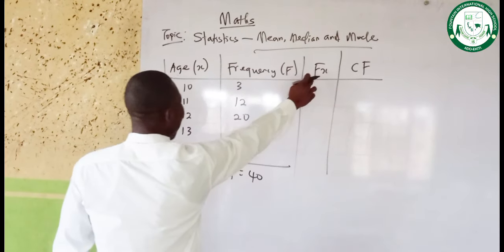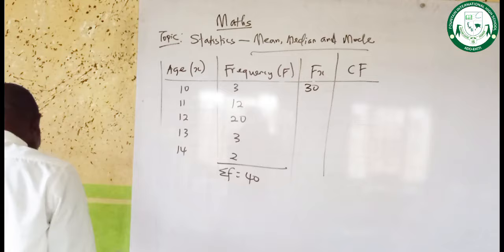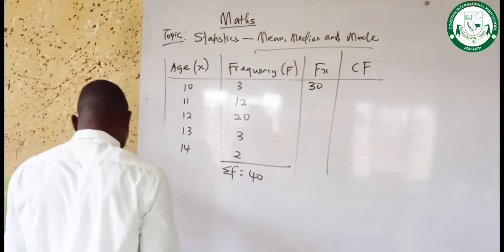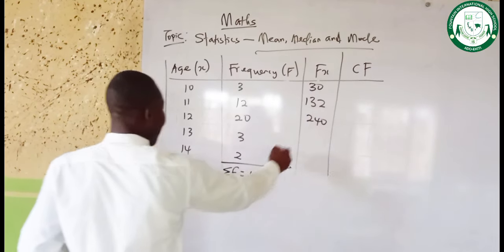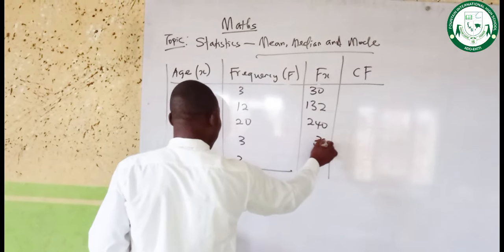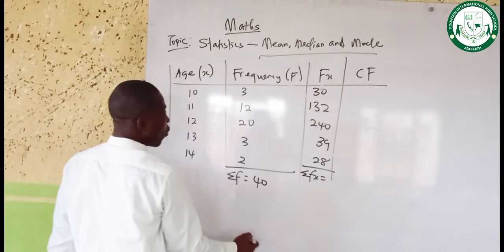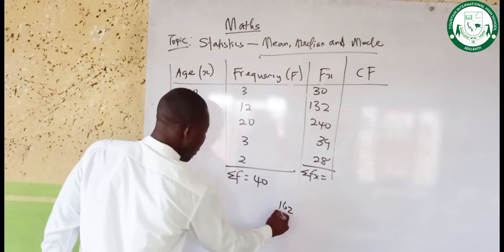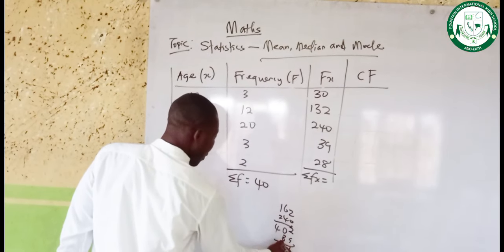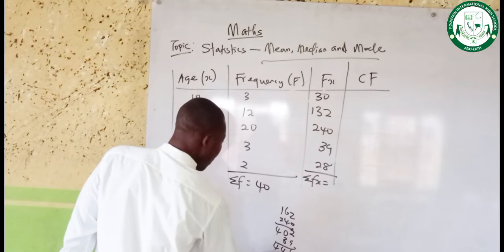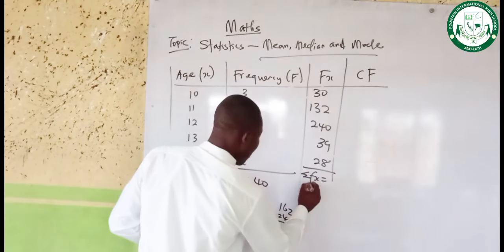Now, how do we get FX? That is F multiplied by X. 10 multiplied by 3 gives us 30. The next one, 11 multiplied by 12 gives us 132. Then 20 multiplied by 12 gives us 240. Then 30 multiplied by 13 gives us 390. And 2 multiplied by 14 gives us 28. So the summation FX: 30 plus 132 plus 240 plus 390 plus 28 equals 469. Summation FX equals 469.